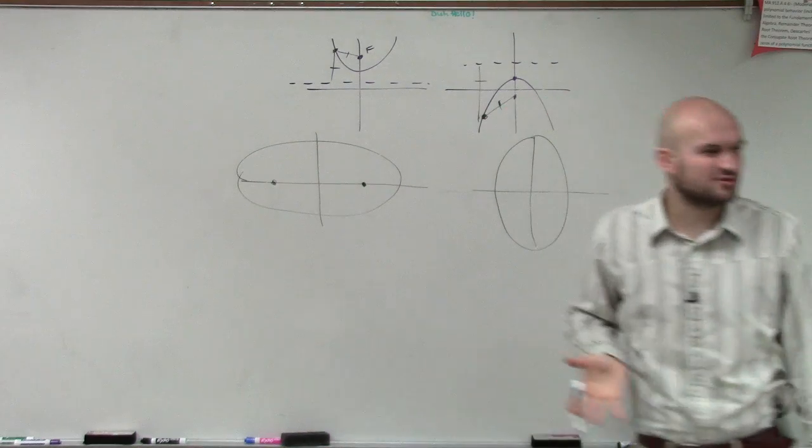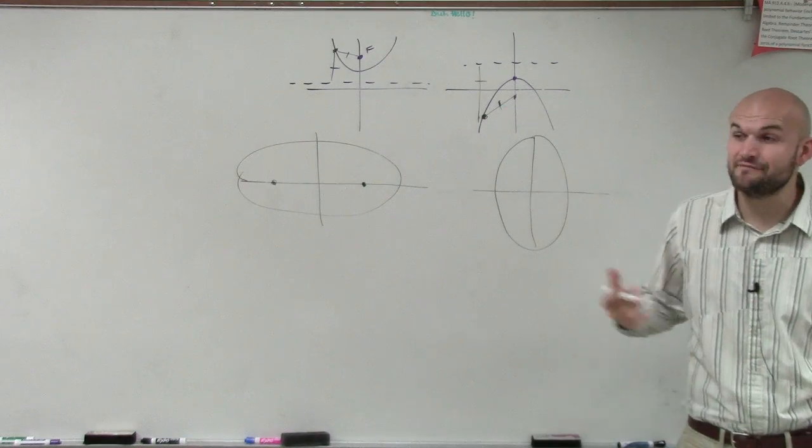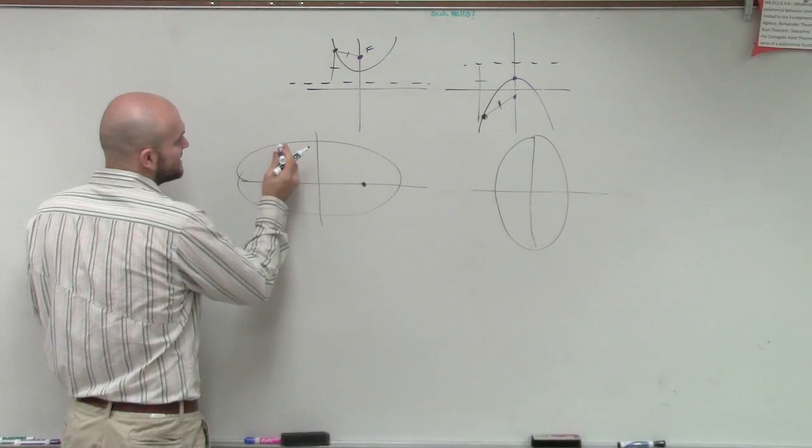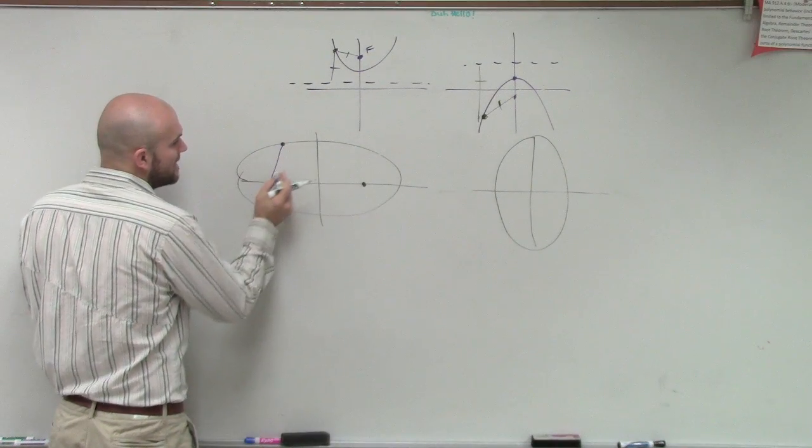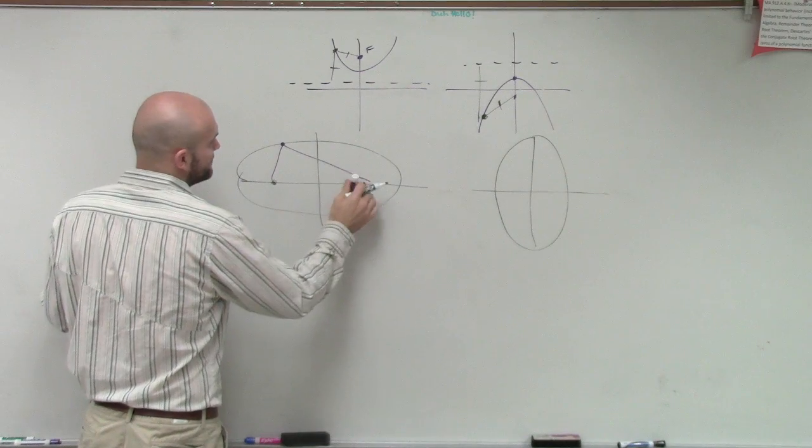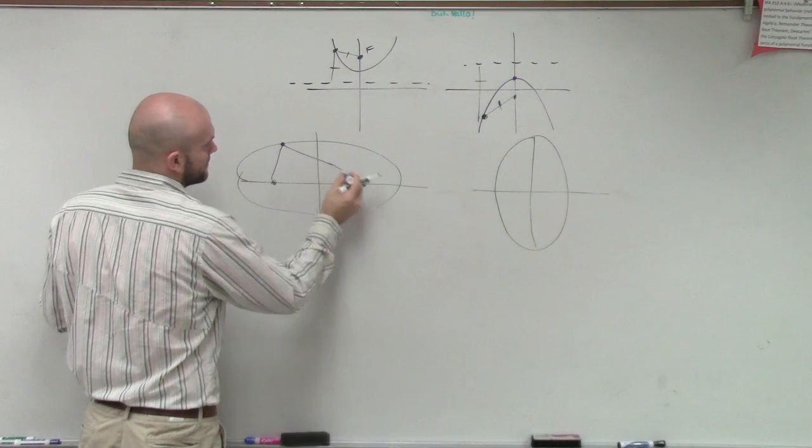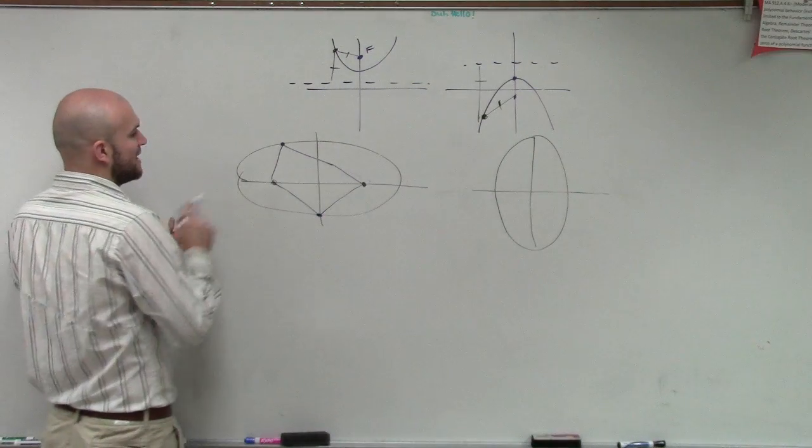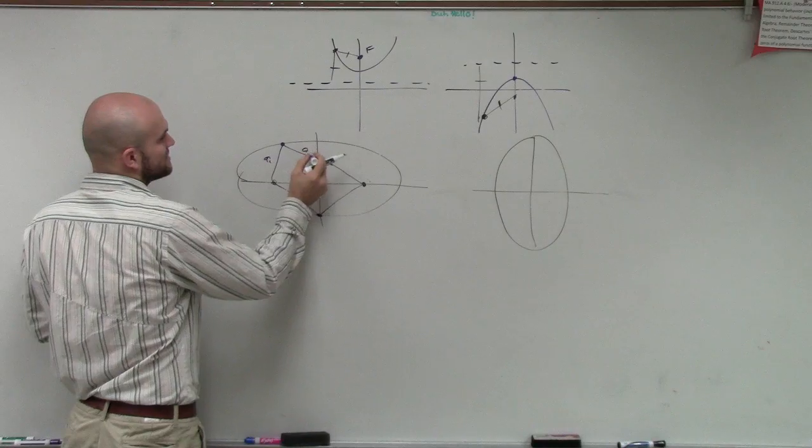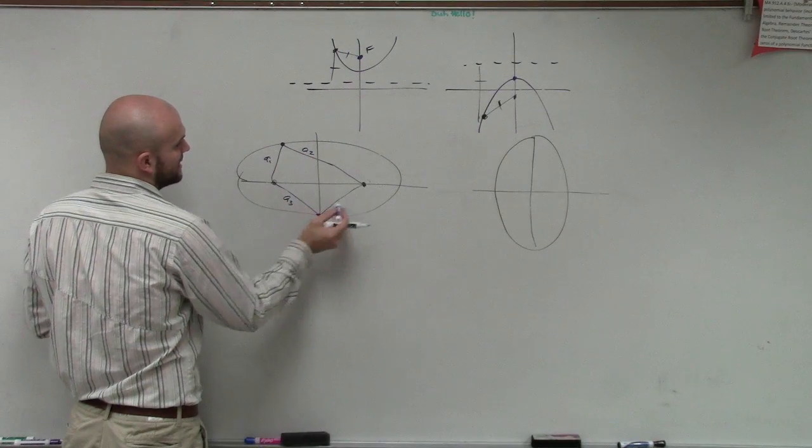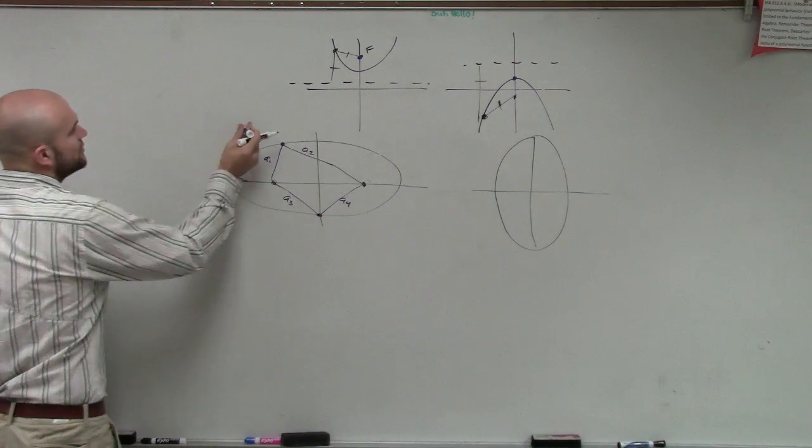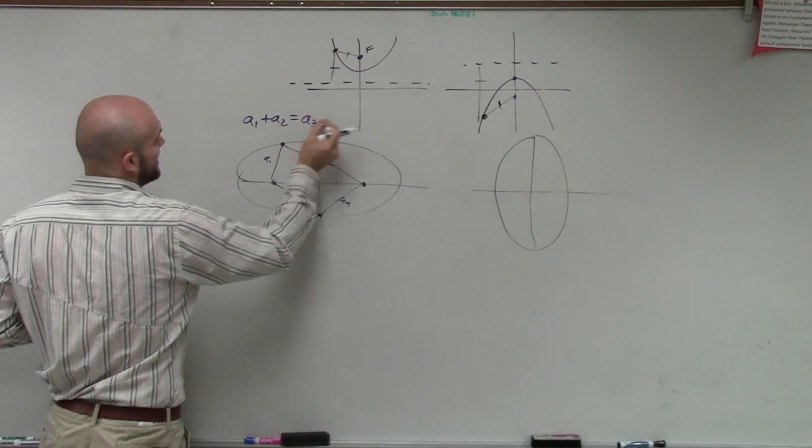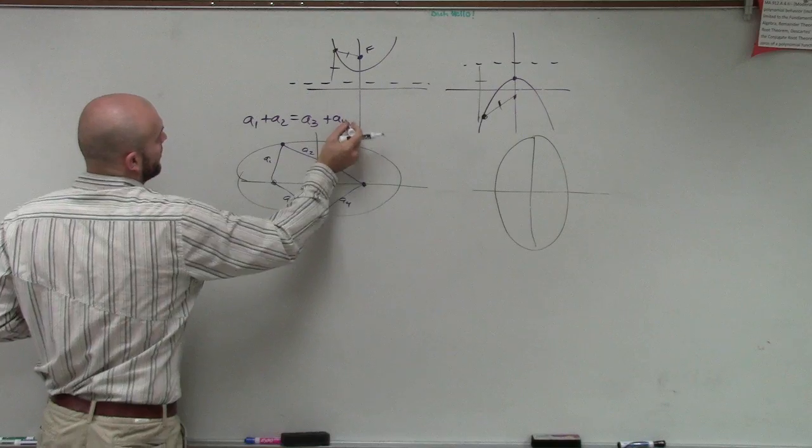Then what we would have is we ended up having two foci. But now we don't have a directrix anymore. So the definition of the foci, if you guys remember, was for any point that is on the line, the sum of these two values is equal for any point on the line. So if I said this was a1 and this was a2, this was a3 and this was a4, then we knew that the sum of a1 plus a2 was equal to the sum of a3 plus a4.